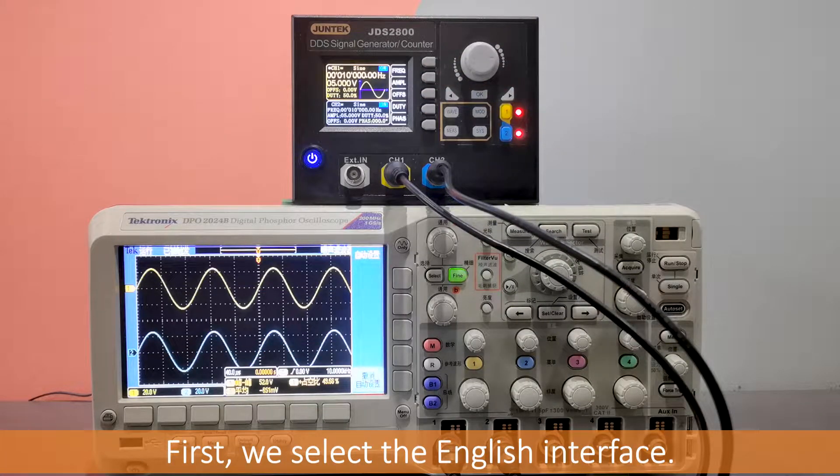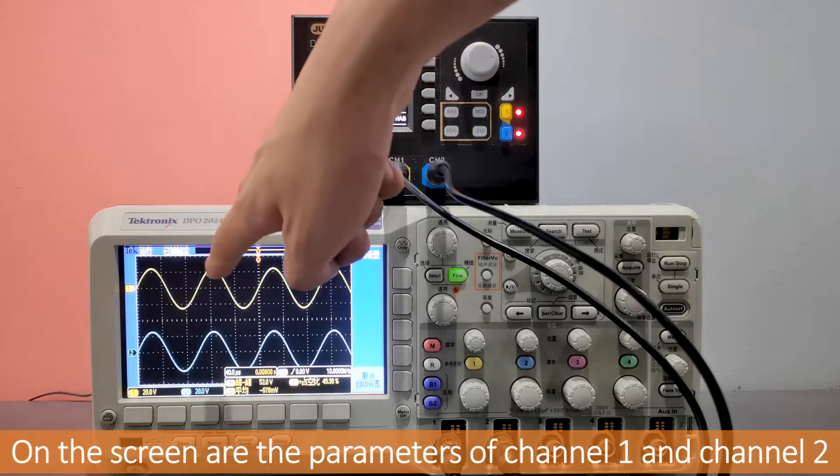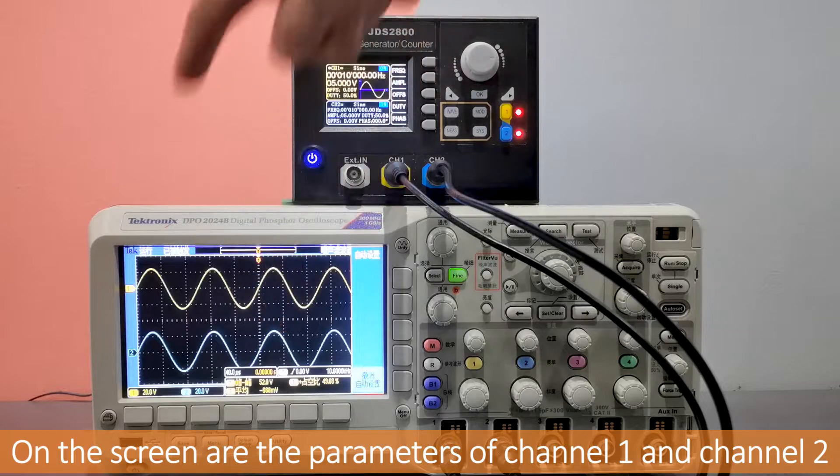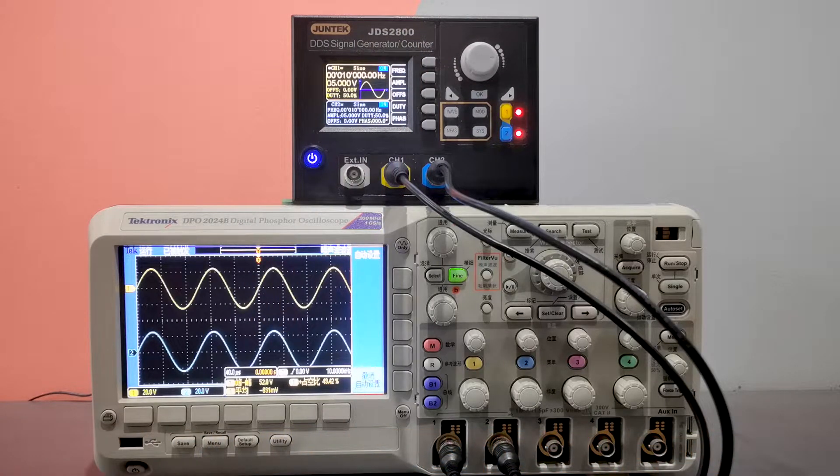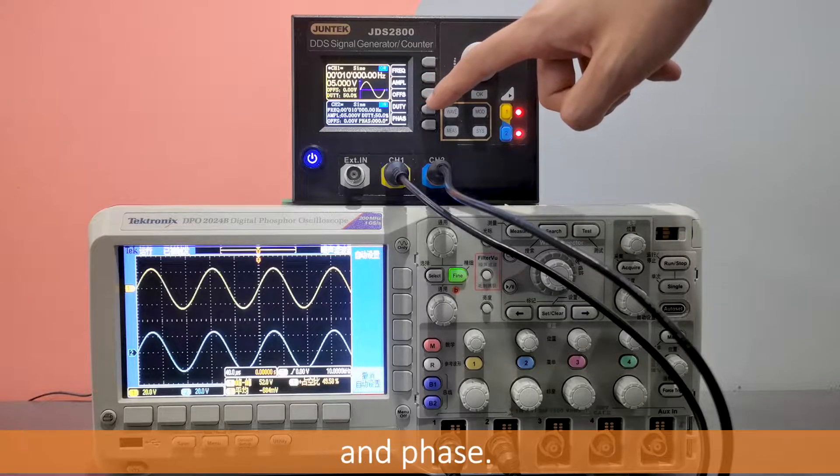First, we select the English interface. On the screen are the parameters of channel 1 and channel 2: frequency, amplitude, offset, duty cycle, and phase.